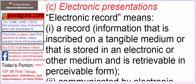Electronic record means a record — information that is inscribed on a tangible medium, meaning a hard disk or DVD, or that is stored in an electronic or other medium. Electronic medium means you can consider it the cloud. And it is retrievable in perceivable form, meaning it can be a physical copy or you can also view it online.